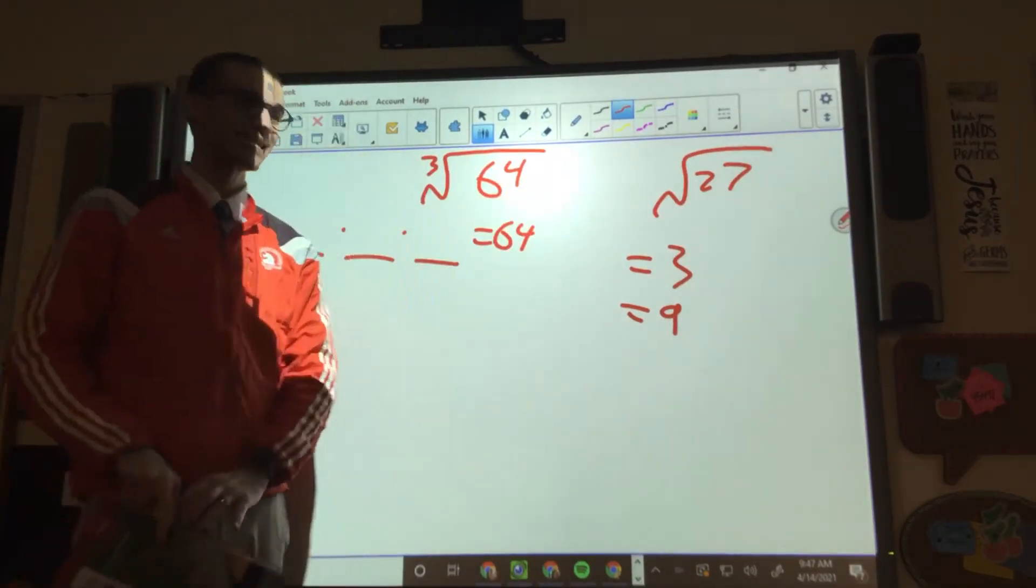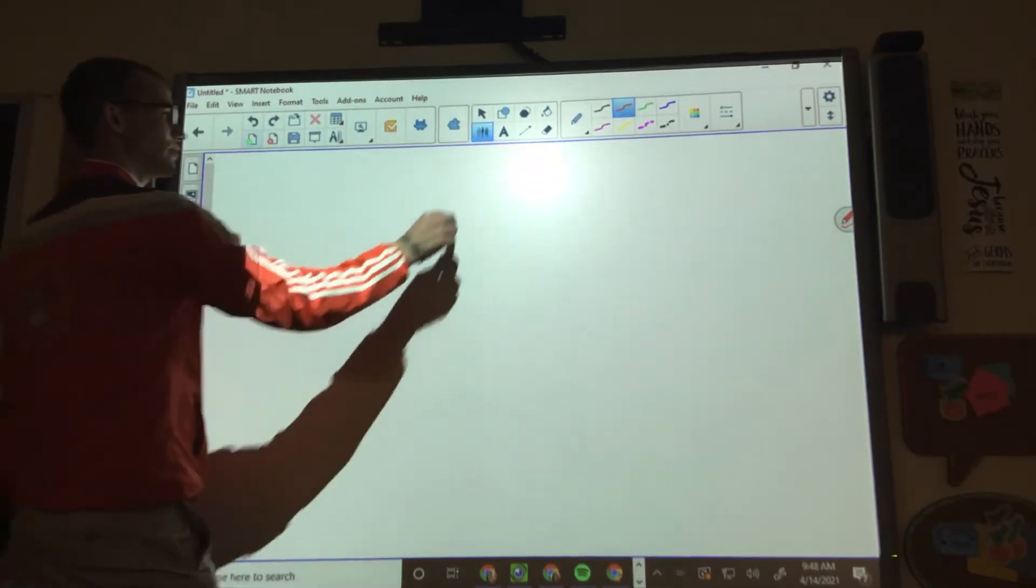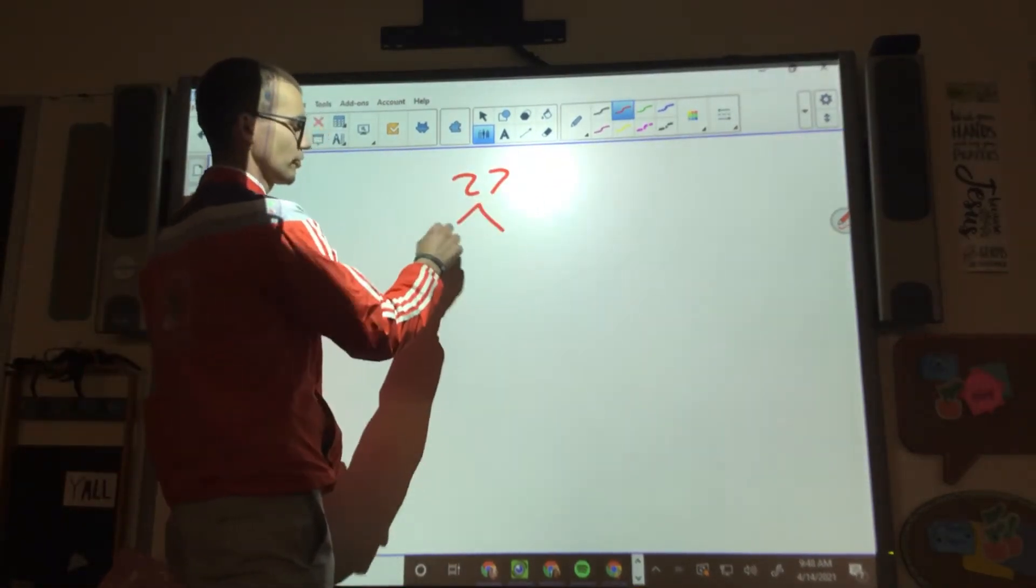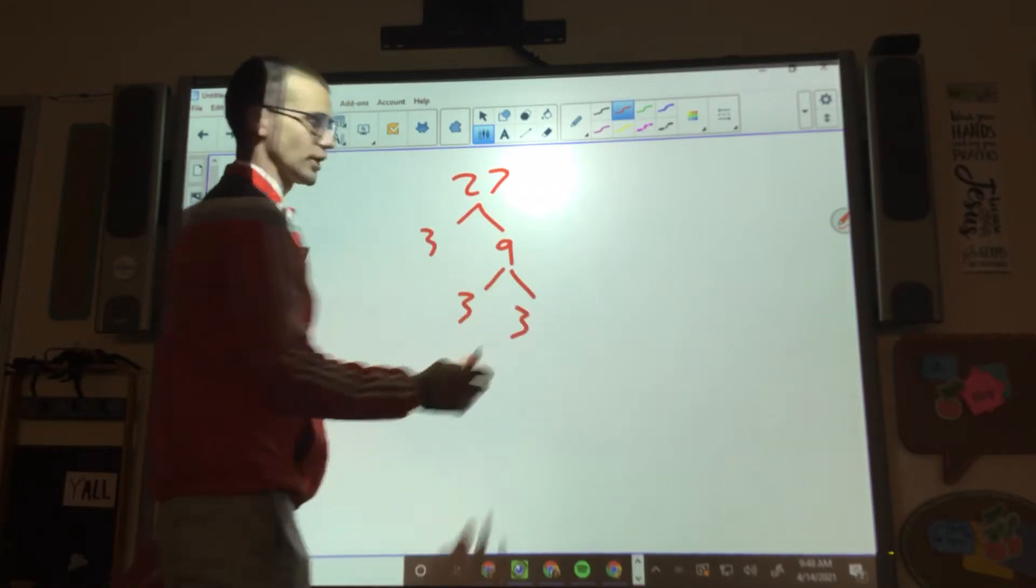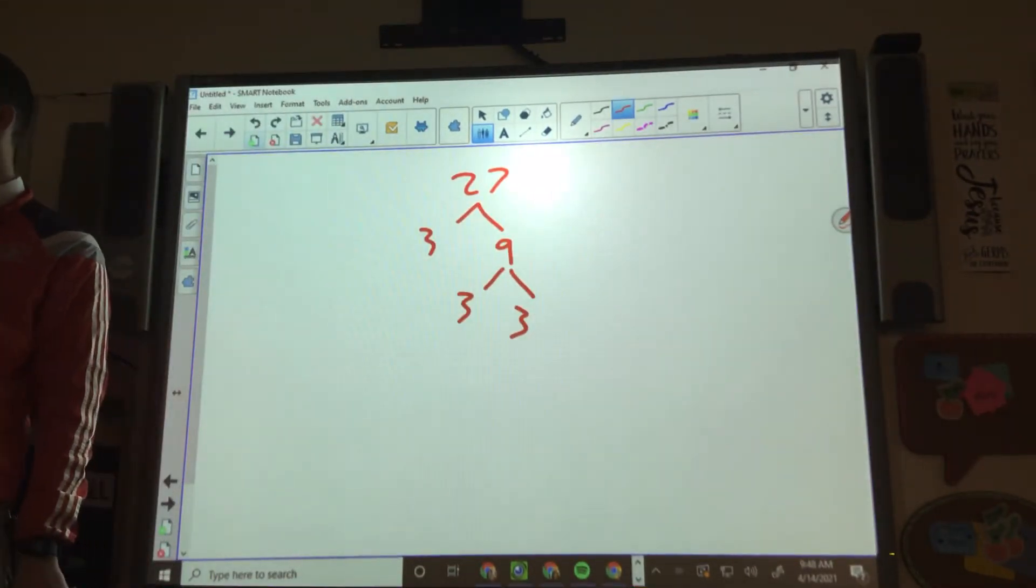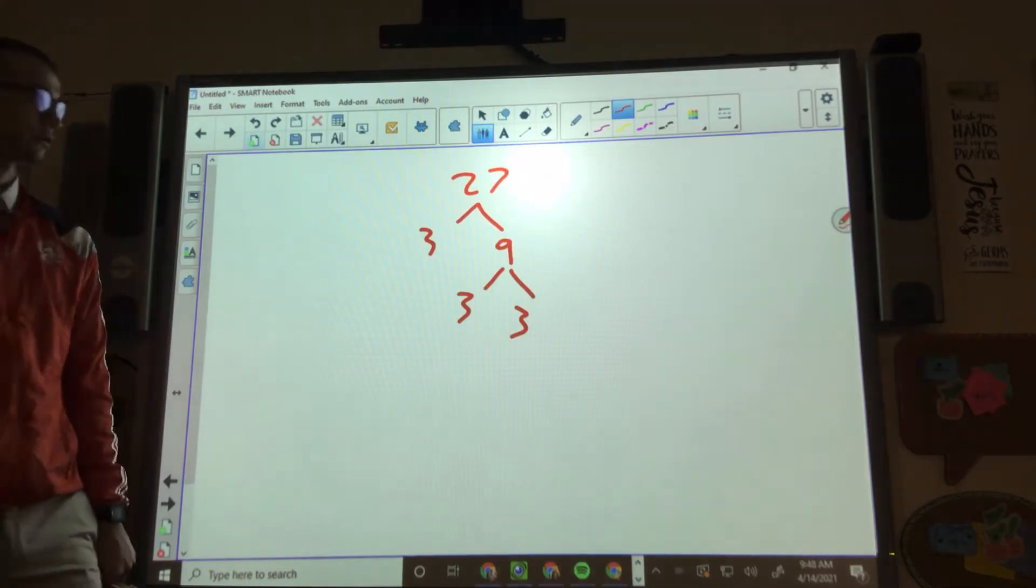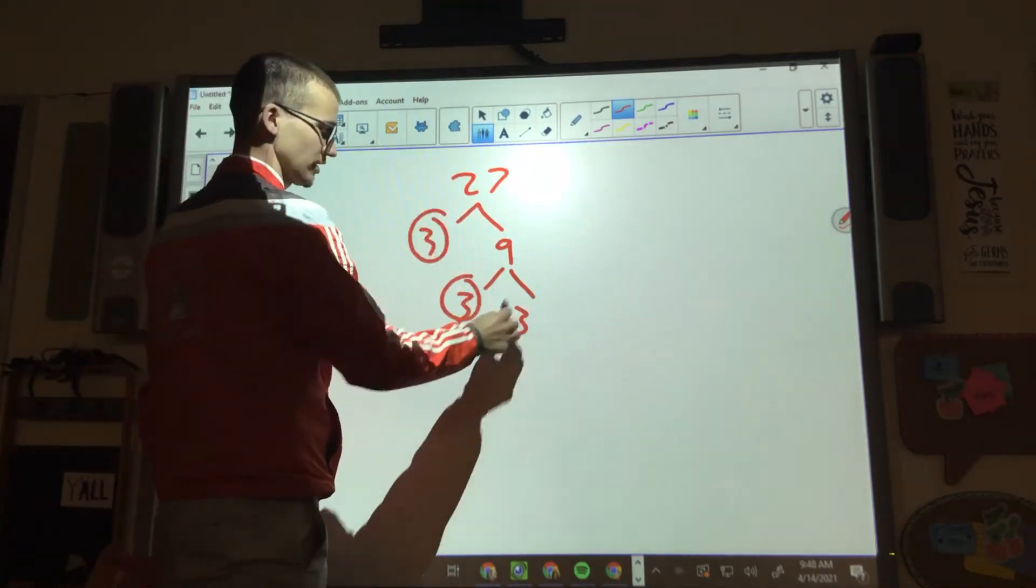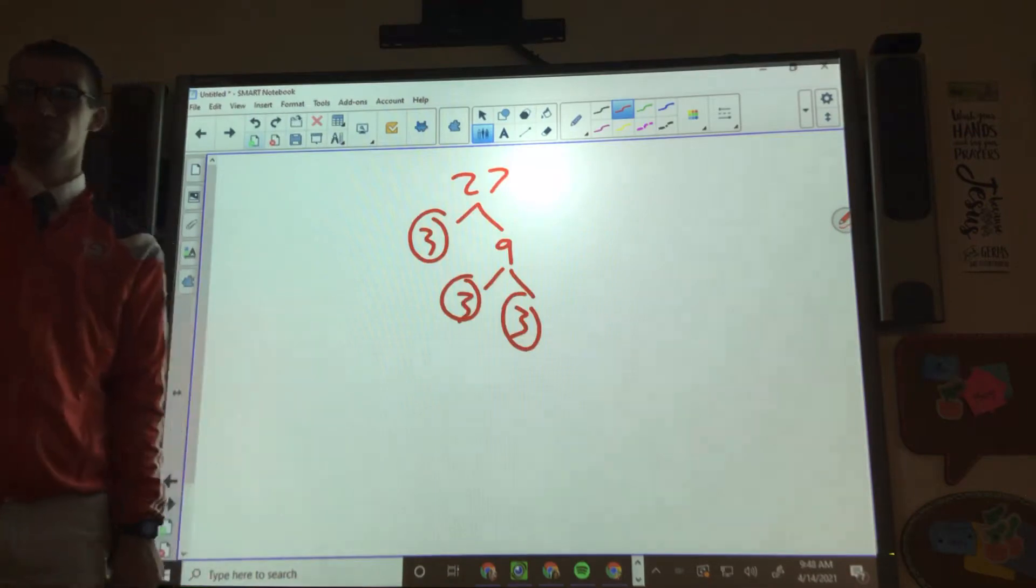So you have to break it down. So for 27, it would be breaking it down to three and nine and three and three. And you're looking for, just like how we did things before, you're looking for two different groupings. Now you're looking for three different groupings. Well guess what? There's only three different groups, so we're good.